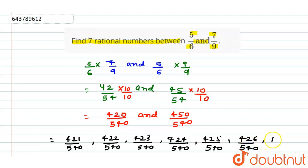And last 427/540. So here are the seven rational numbers between 5/6 and 7/9. Hope you got the answer.